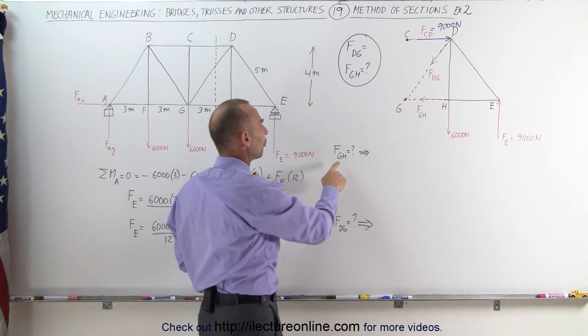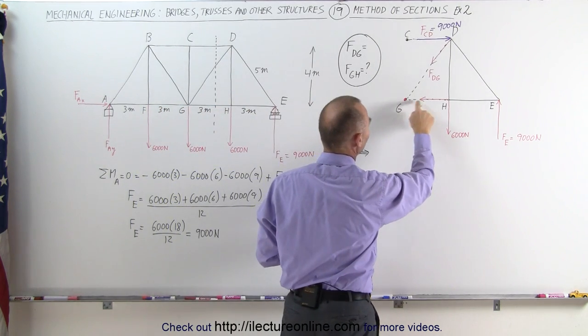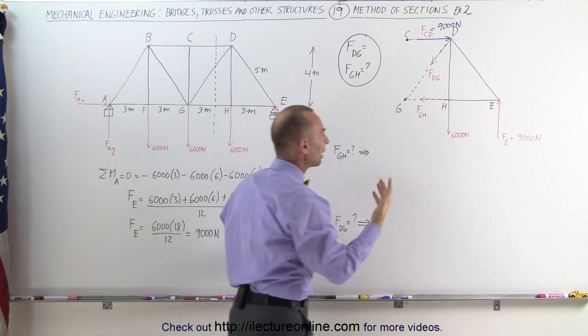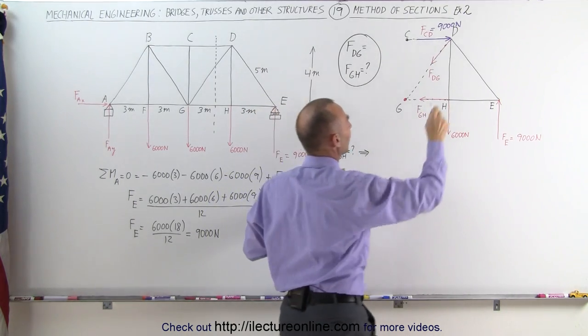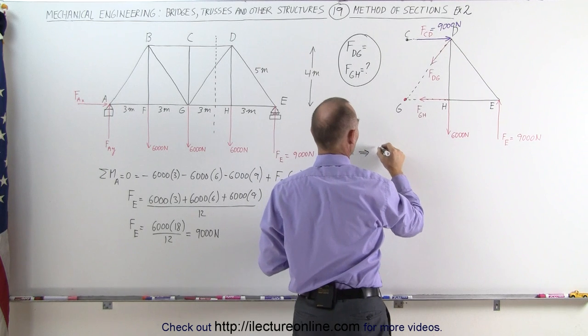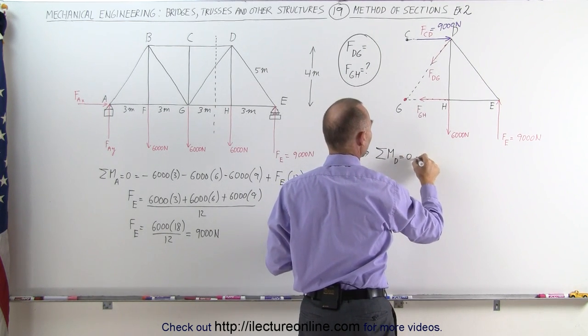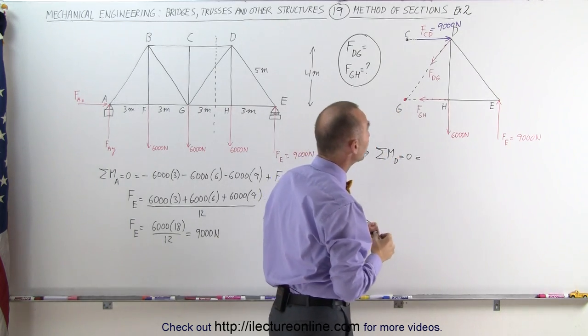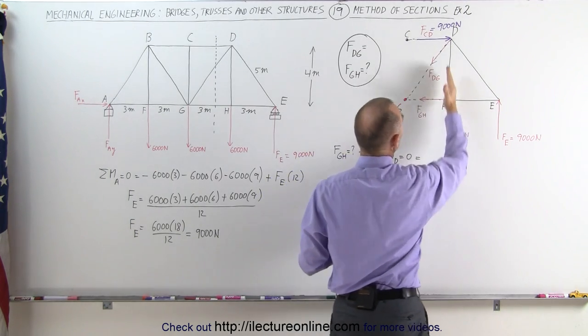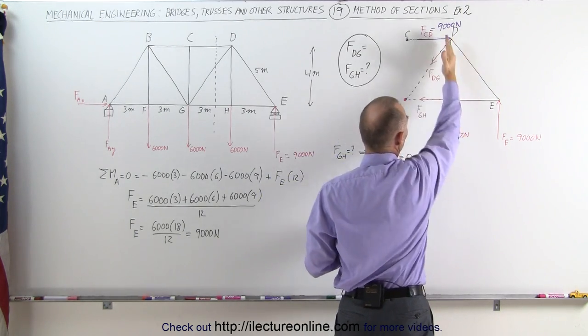Let's start with finding the force between G and H. That's this force right here. We need to put a pivot point on there somewhere. Let's take the pivot point right here, the pivot point D. We could say that the moment about point D must equal zero, and let's sum up all the moments about point D.